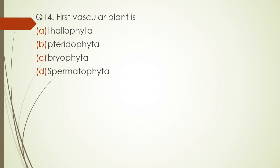Question number fourteen. The first vascular plant is: thallophyta, pteridophyta, bryophyta, or spermatophyta? The correct answer is option B — pteridophyta.